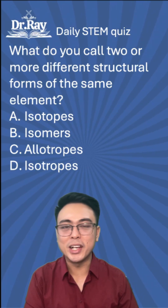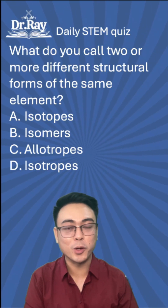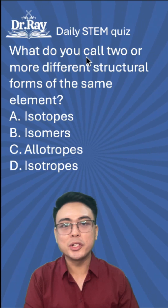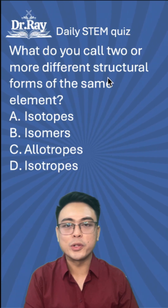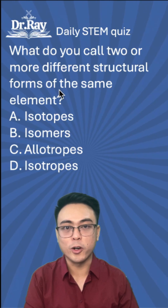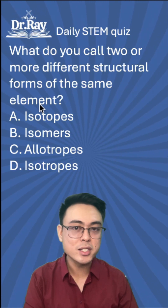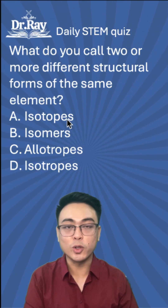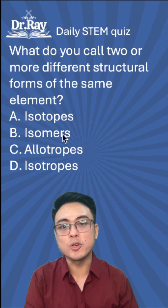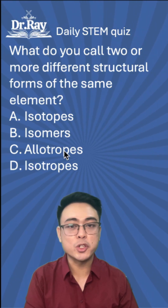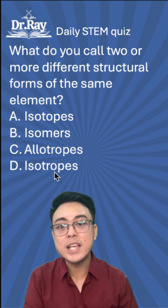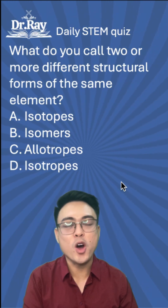It's time again for your daily quiz. Here's a simple question: What do you call two or more different structural forms of the same element? Is it isotopes, isomers, allotropes, or isotopes?